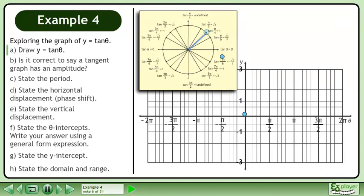Plot the values of tan theta from the first quadrant. Note that we have an asymptote when the value of tan theta is undefined. Plot the values of tan theta from the second quadrant.